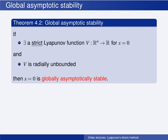First, the conditions for being a strict Lyapunov function must be satisfied in the whole state space. So the domain D where the function is defined and the conditions to be a strict Lyapunov function are satisfied has to be the whole state space. And secondly, the Lyapunov function needs to be radially unbounded.